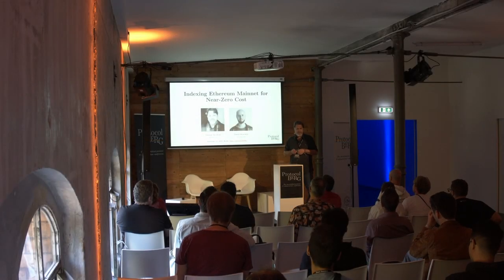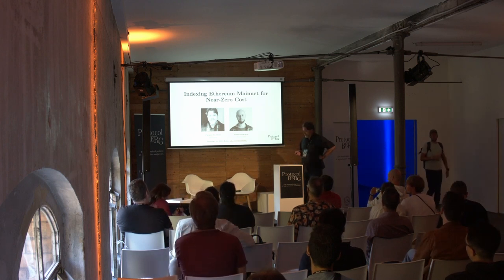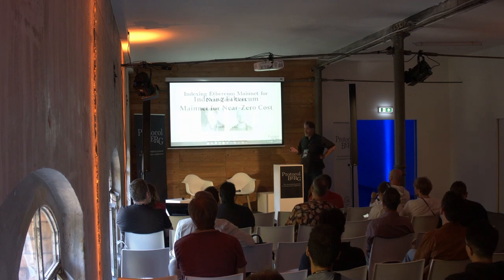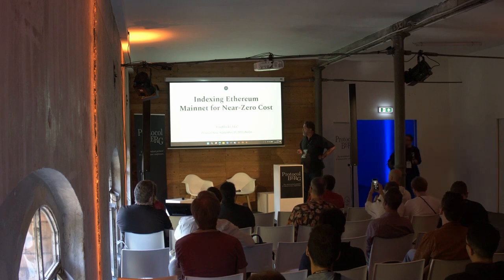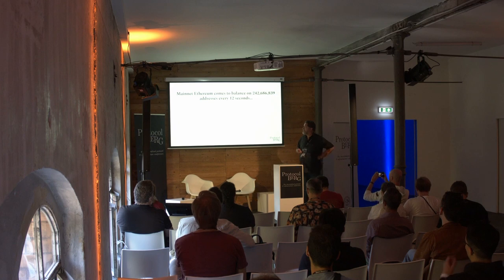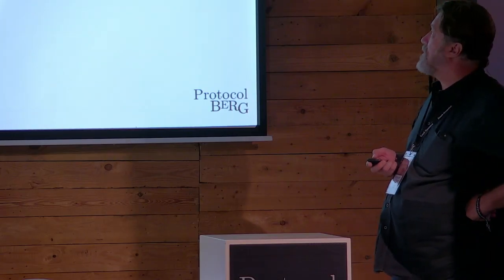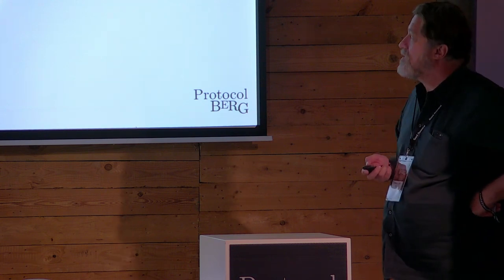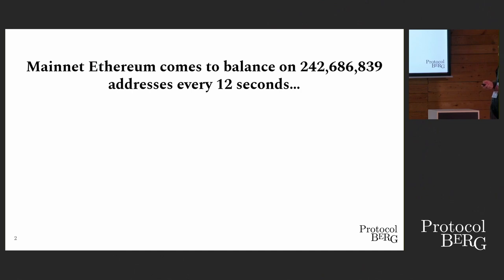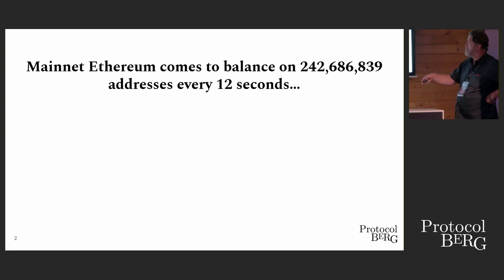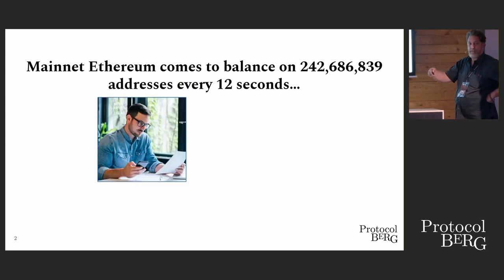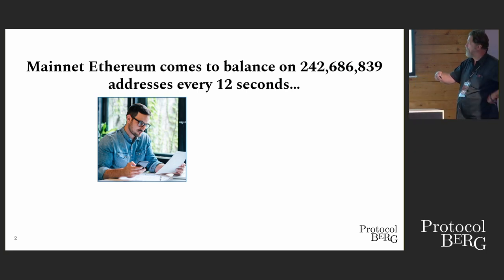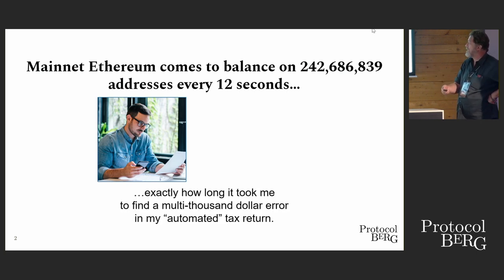I'm going to talk about indexing the Ethereum mainnet. Mainnet Ethereum comes to perfect balance on 242,686,839 accounts every 12 seconds. This is what we think blockchains look like.